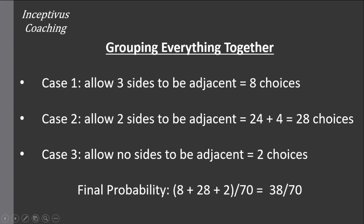Now, summing over all the choices from each of those cases together, we have 8 plus 24 plus 4 plus 2. So together, that's 38 out of 70 total.